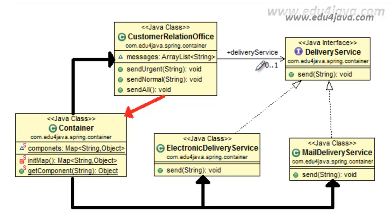I'm Elie for Edu4java and this is tutorial number 2 of Spring Framework. We are going to see inversion of control and dependency injection. The last thing we saw in the last tutorial was a graphic showing that a component needed one of two instances, and to get this instance it asked the container.